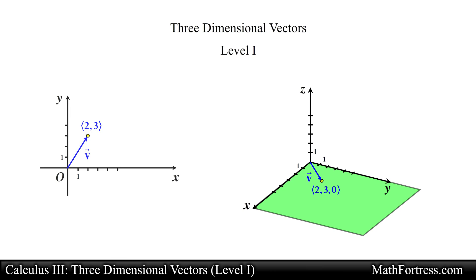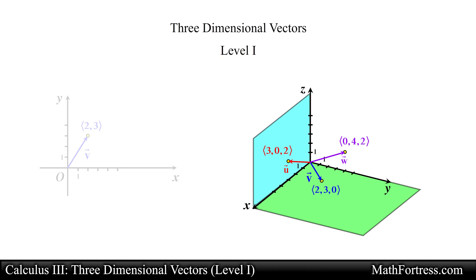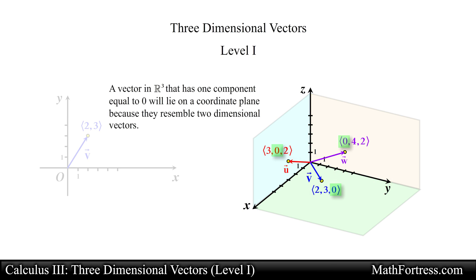In the same manner, the following vectors would be located on the xz-plane and yz-plane respectively. Notice that in each case there is a component equal to 0. Any vector in R³ that has one component equal to 0 will lie on a coordinate plane because they resemble two-dimensional vectors.